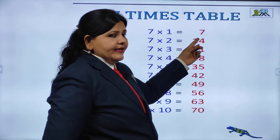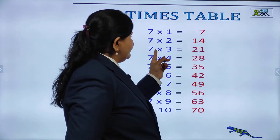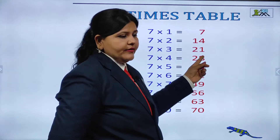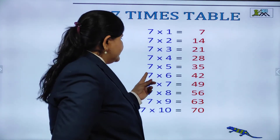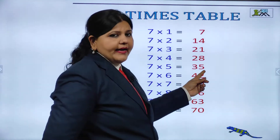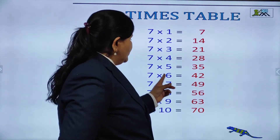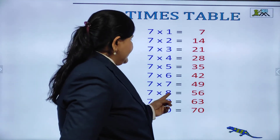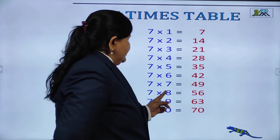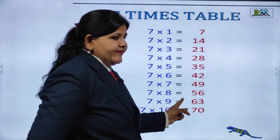7 ones are 7. 7 twos are 14. 7 threes are 21. 7 fours are 28. 7 fives are 35. 7 sixes are 42. 7 sevens are 49. 7 eights are 56. 7 nines are 63. 7 tens are 70.